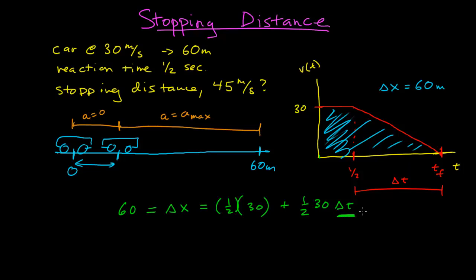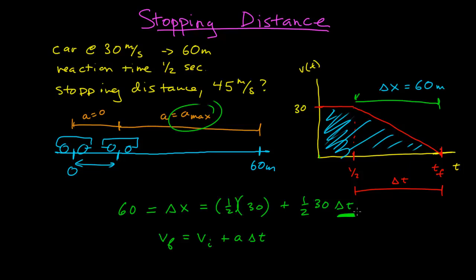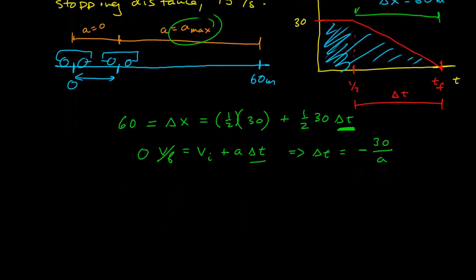How else can I relate delta T to my unknown, which is the maximum acceleration of the car? That maximum acceleration can be found from the last region — from here to here — where the acceleration is constant. The final velocity is equal to the initial velocity plus the acceleration times the time interval. The final velocity is zero, so delta T is equal to minus the initial velocity (30) divided by the acceleration.